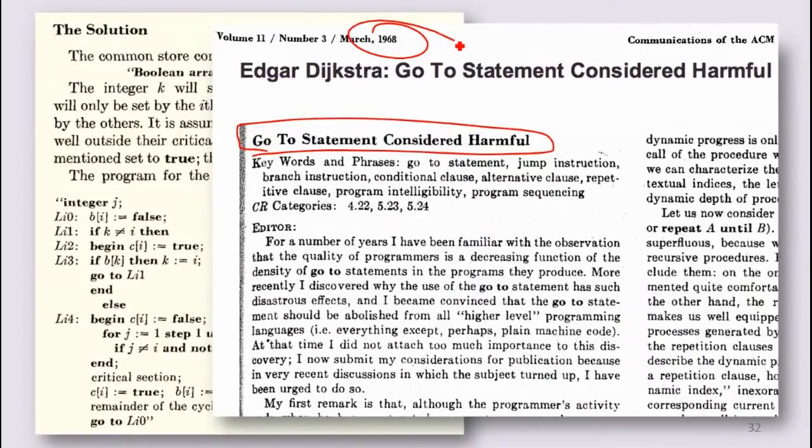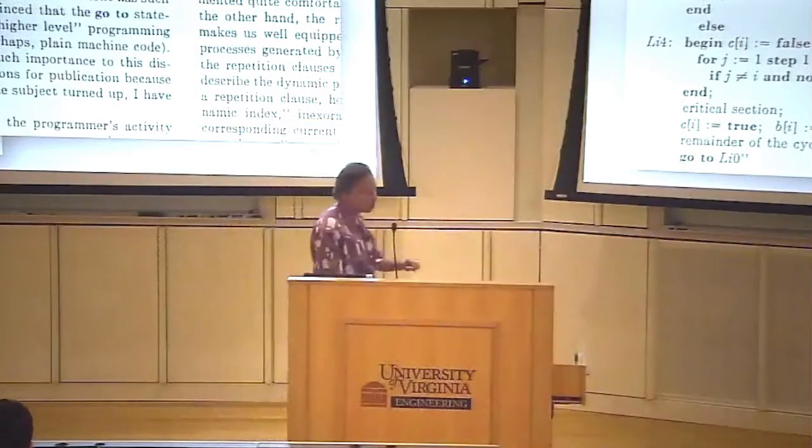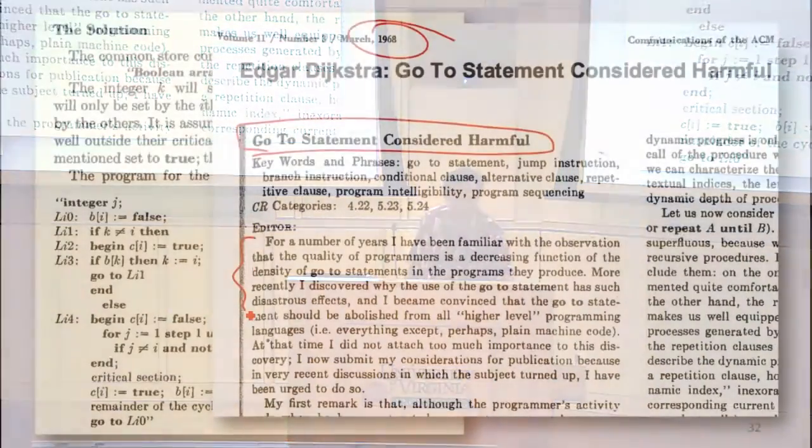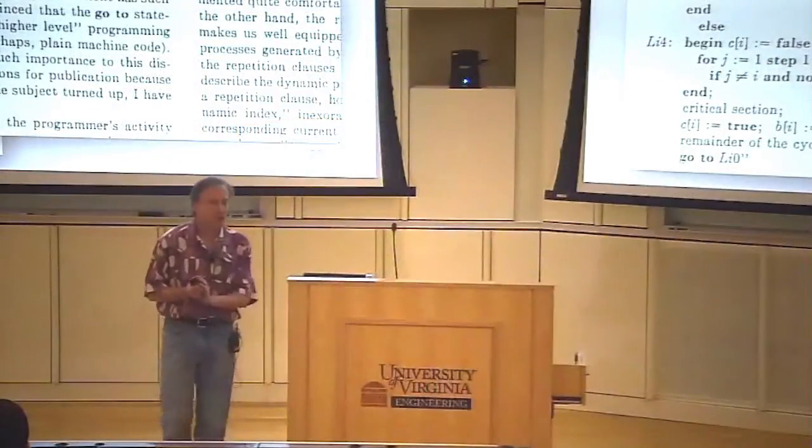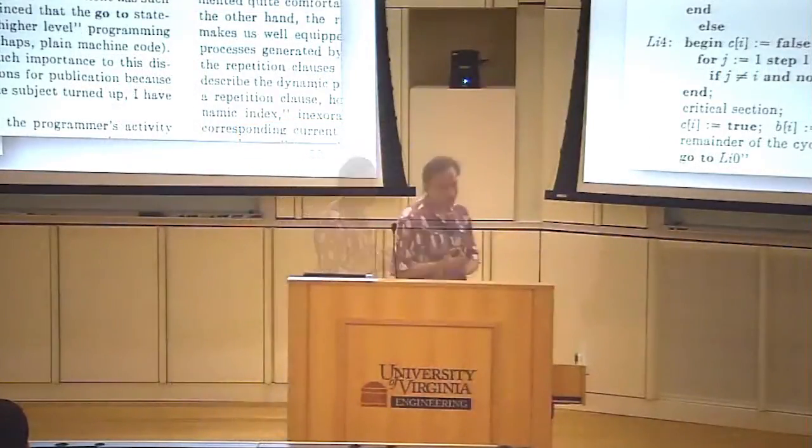three years after the code that was in the mutual exclusion example. It might have been he had not seen the light yet on not liking go-to. And he starts with, for a number of years, I've had this observation that the quality of programmers is a decreasing function of the density of go-to statements. And I think that is probably still a good observation, at least from the example code we've looked at in both the buggy SSL code compared to the Apache SUExec code.